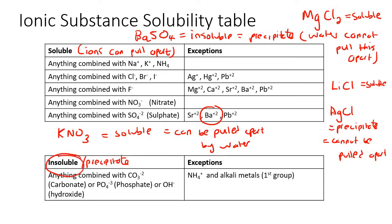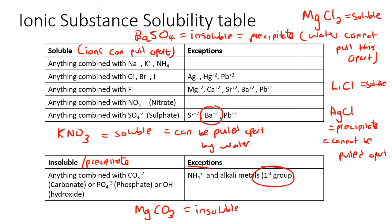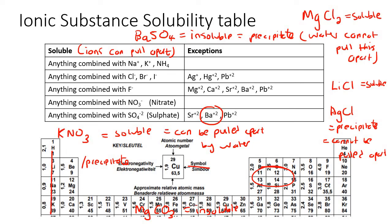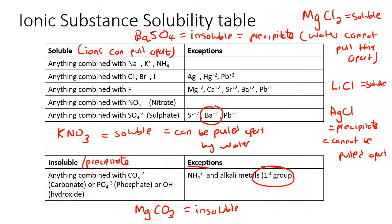Here are all the things that are insoluble. Anything combined with CO3²⁻ is insoluble — for example, magnesium carbonate would be insoluble. But there are exceptions: NH4 and any alkali metals from group 1 on the periodic table are exceptions. Magnesium is in group 2, not group 1, so this exception doesn't apply — magnesium carbonate is still insoluble.